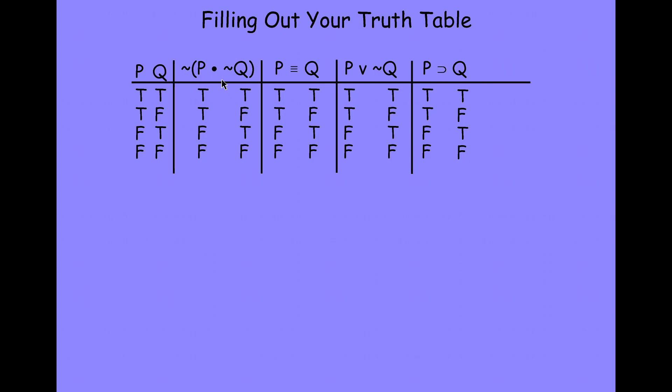Inside these brackets we have a dot and a tilde. When we have a tilde with a binary connective, the tilde always goes first, then the binary connective. So the tilde applies to Q — we're going to look under that Q, use the rule for the tilde, and fill out that column first. The next logical connective we'll do is the dot, because it's the second connective inside those brackets after the tilde. Then we'll go outside the brackets and do that last tilde, which is the main connective and gives us the truth value for the formula every different way the world could be. Stop the video, think about the rule for the tilde, and try to fill out that column on the truth table.